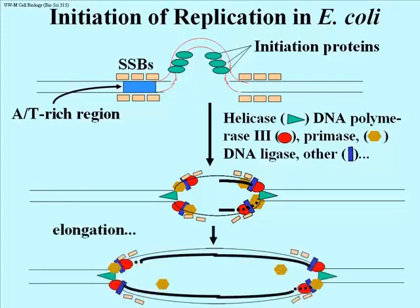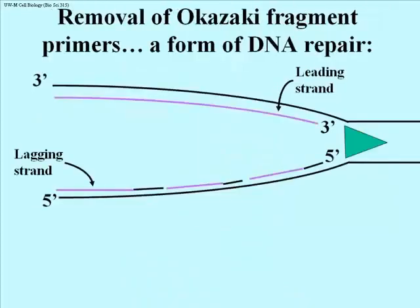Once elongation is underway, the replication enzyme complexes move away from the origin in both directions. Focusing on one replication fork in E. coli: after synthesis of a primer at the origin of replication, the leading strand is being synthesized continuously as helicase progressively unwinds DNA at the fork, adding new nucleotides to its 3' end. In contrast, several Okazaki fragments are shown having been made along the lagging strand template, each with a primer. The question now is: how is the primer removed, and how are the remaining gaps filled in with DNA nucleotides? After all, cells will be making two new and complete DNA molecules — not some DNA with bits of RNA in it.